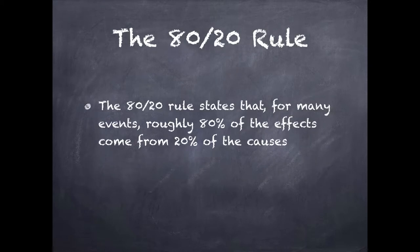There's a rule called the 80-20 rule, and it basically states that for many events, roughly 80% of the effects or results come from 20% of the inputs or causes. So we want to find what that 20% is that will give us 80% of the results.